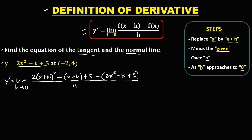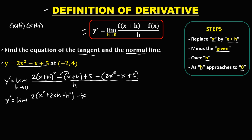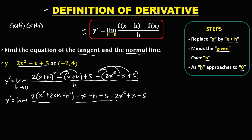Then simplify. We have y prime equals the limit. We need to expand x plus h to the power 2. We can rewrite this as x plus h times x plus h, then do the FOIL method. That becomes 2 times x squared plus 2xh plus h squared. Then distribute this negative: so negative x, negative h, then plus 5, distribute this negative: negative 2x squared. Negative times negative gives positive, and this is negative 5, then over h as h approaches 0.